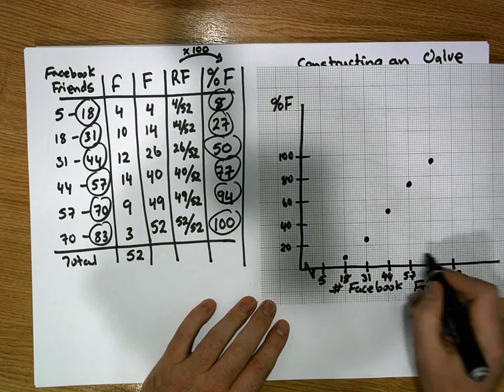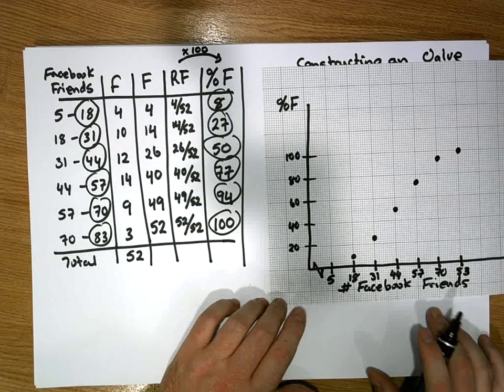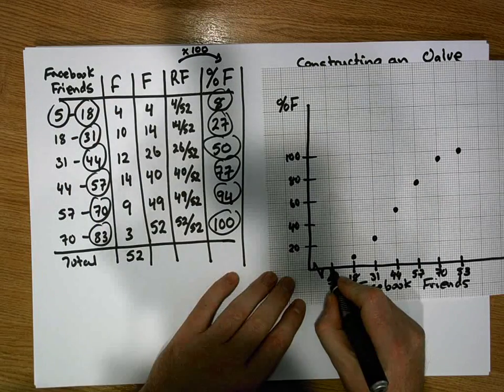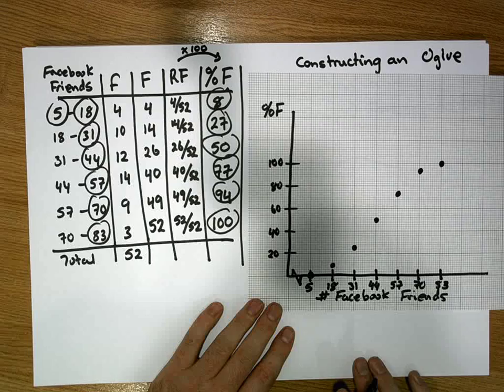And then finally, at 83, I'm going to go up to 100. At 83, I'm going to go to 100, which gives me something that looks like this. And then finally, what we do is we put zero at our lower bound.